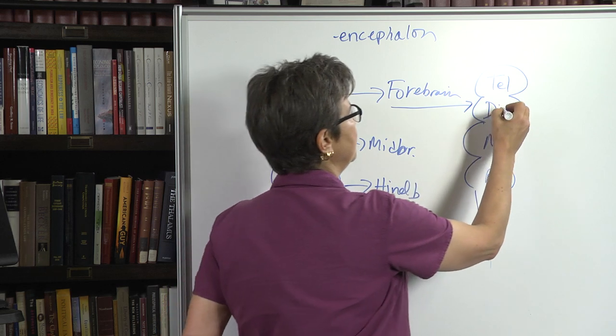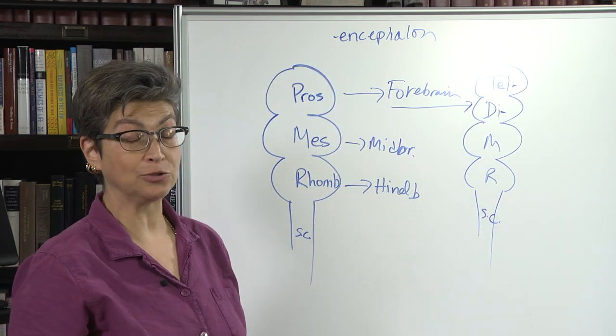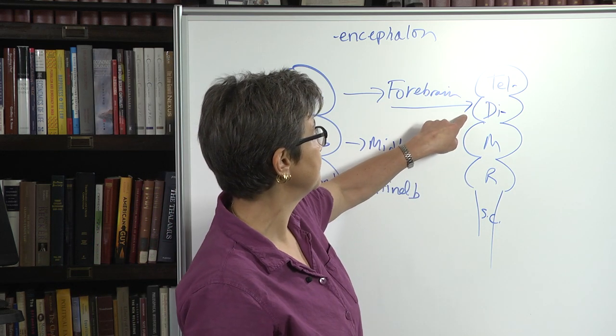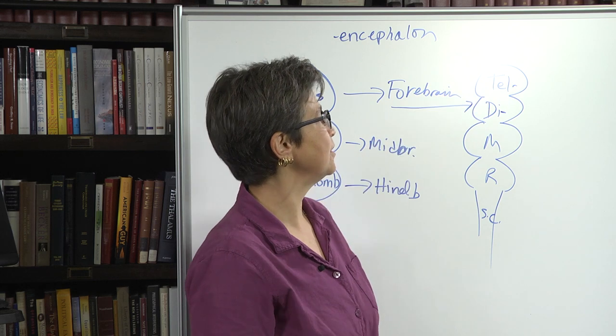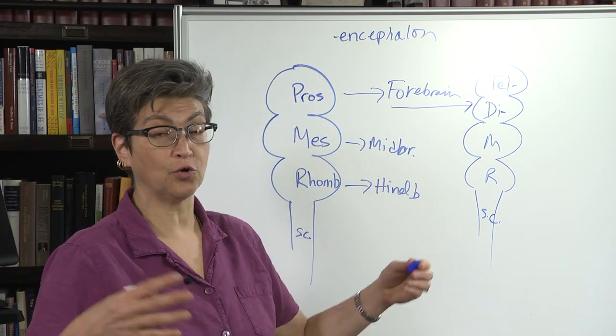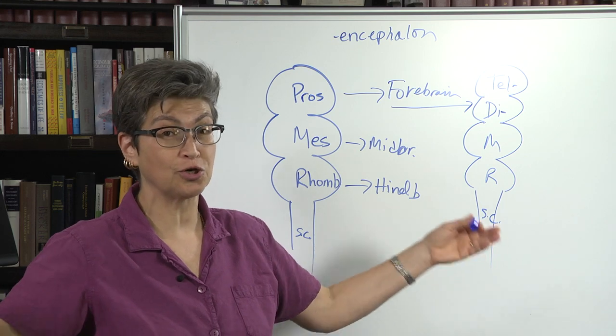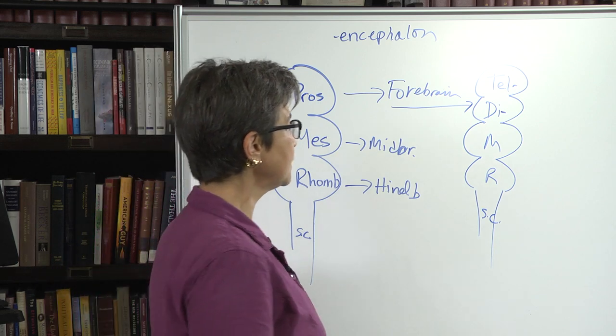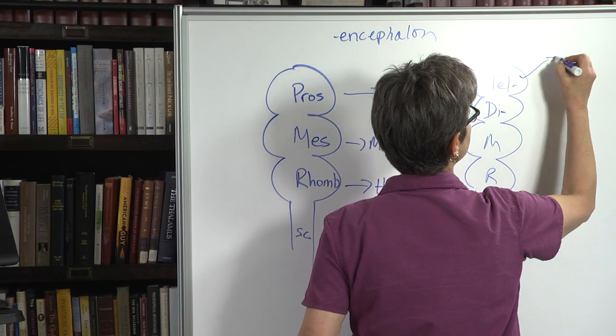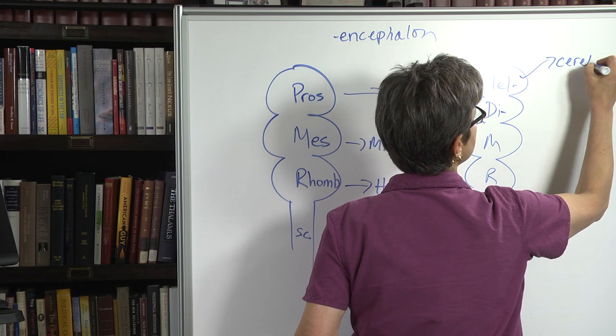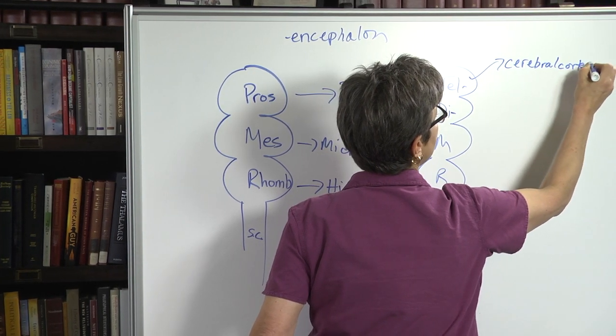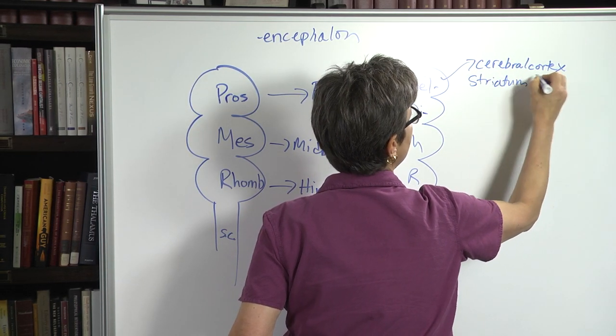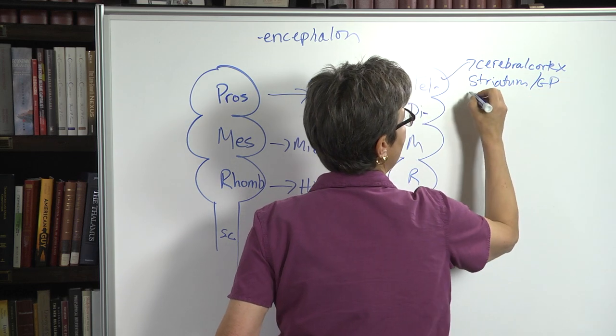The diencephalon is the developmental origin for the thalamus, and we can call it the thalamus. The telencephalon is the developmental origin for an adult structure that has no other name, so we'll also call that adult structure the telencephalon. What is contained in the telencephalon? Cerebral cortex, the core parts of the basal ganglia—which are the striatum and globus pallidus—and the amygdala.